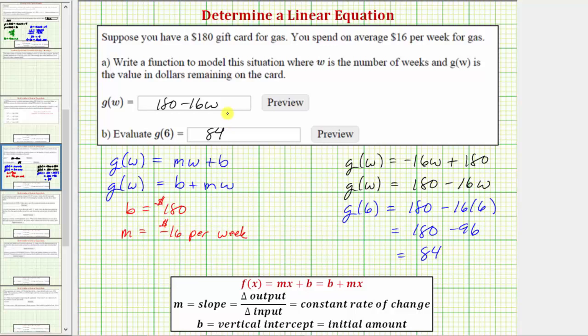But let's write a sentence to explain the meaning of this function value. g(6) = 84 is telling us that after six weeks, the remaining value on the card is $84.